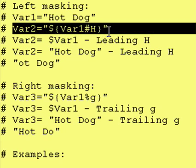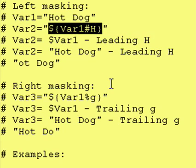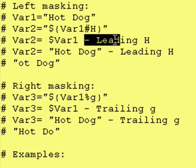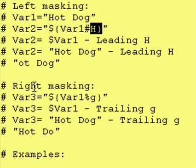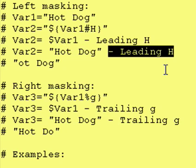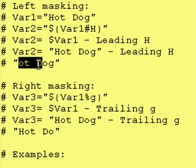So in this example, this would expand out to dollar sign var1 minus a leading capital H, because that's what we have up there. Dollar sign var1 expands out to hot dog. And then we minus from it a leading capital H, if it exists, which it does. And that leaves us just with OT space DOG.